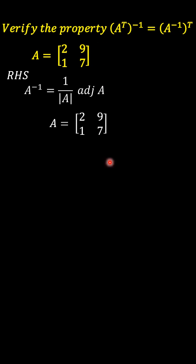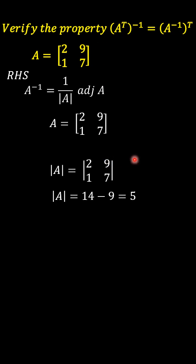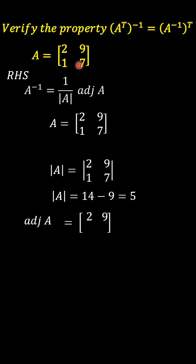First, we find out the determinant of A. The determinant of the A matrix is 5. Next, we have to find out the adjoint of A. For this, we consider this matrix. To get the adjoint of A, first we have to change the sign of these two numbers.